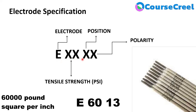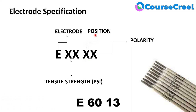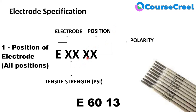After the first two digits, the third digit represents the position of the electrode. In E6013, the '1' represents all positions — vertical, horizontal, and inclined — meaning this electrode is useful for all welding positions.